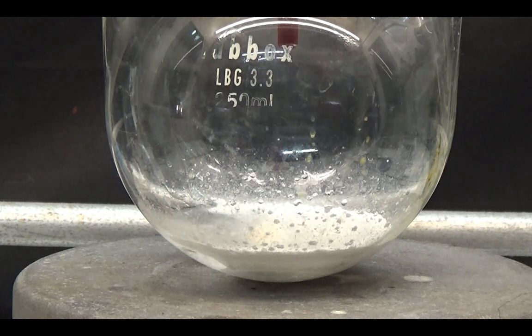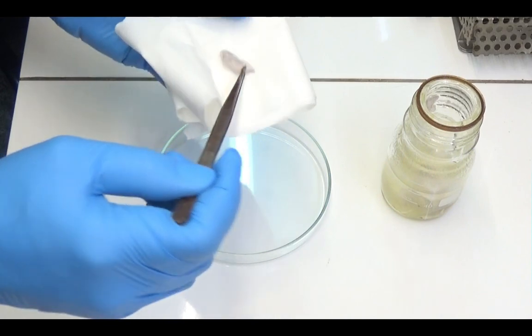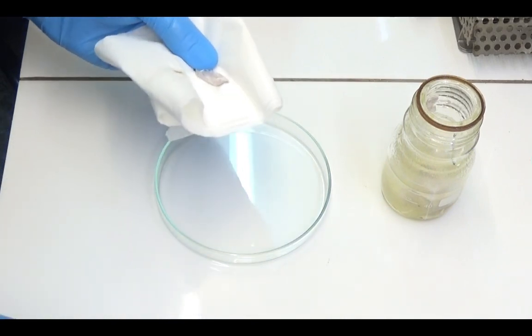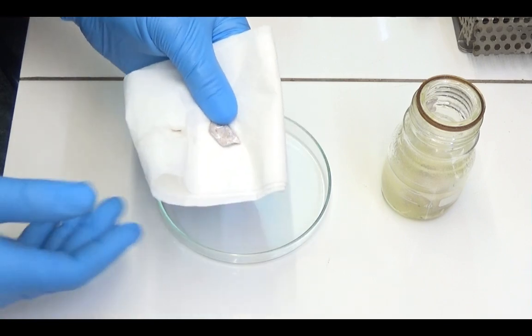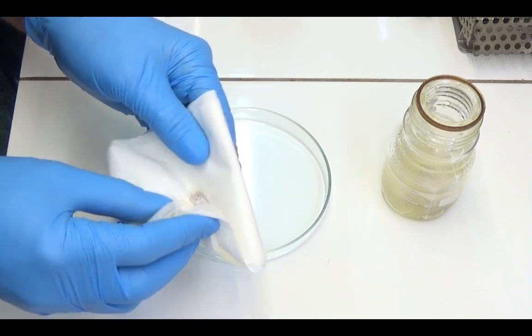The initial step we will take is to prepare sodium ethoxide. We need sodium metal that has been freshly cut and washed with hexane. Sodium can cause severe burns and fire if it comes into contact with water, making it very dangerous.